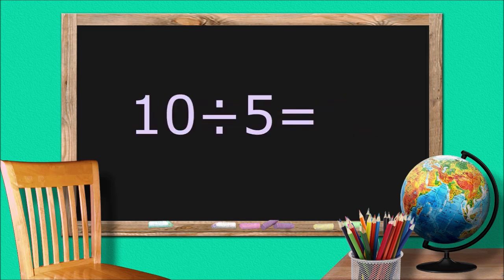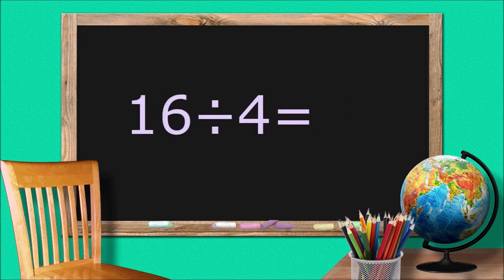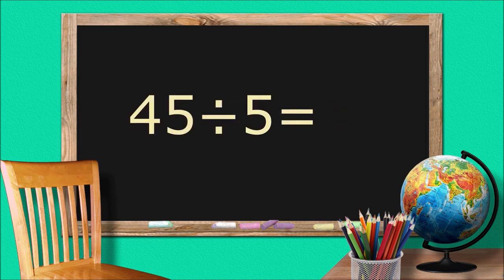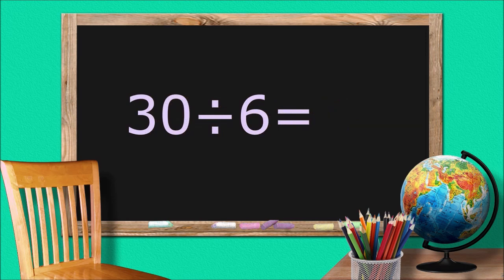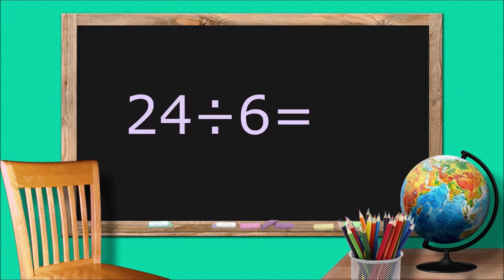10 divided by 5 equals. 45 divided by 5 equals 9. 30 divided by 6 equals 5.